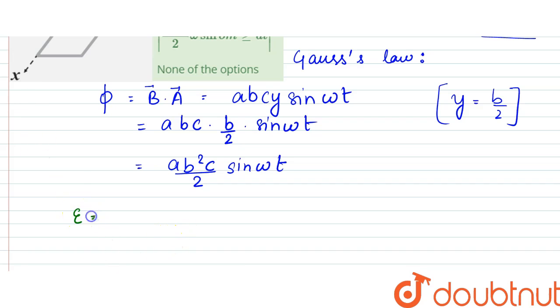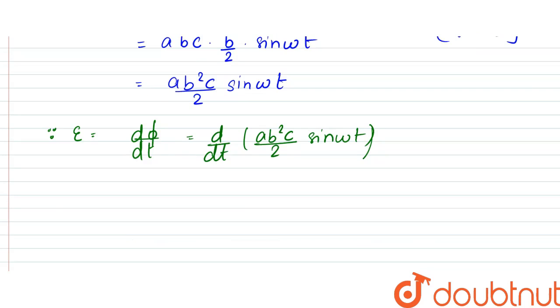So, the induced EMF would be equal to minus D phi by Dt. And since magnitude wise, we can write it simply D phi by Dt. So it would be equal to D by Dt of AB squared by C sine by 2 into sine omega t.